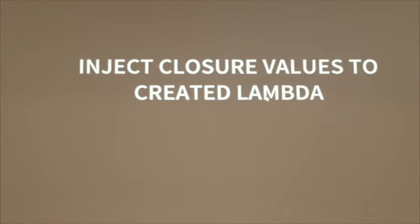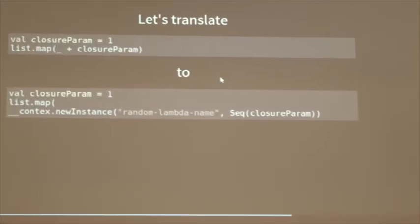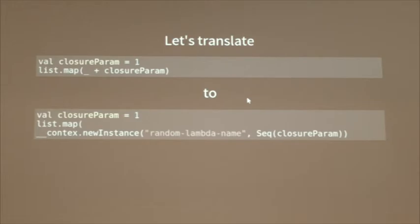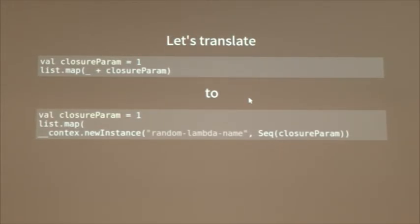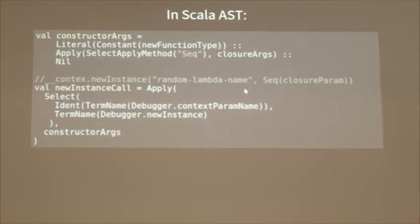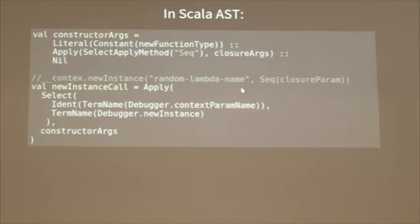Coming back: we gather all the closure parameters and now we have to inject them into the newly created lambda. It's really simple — take the expression and transform it into something where a context entry point creates a new instance of the lambda and passes all the closure parameters we found. In Scala AST this is straightforward. For a simple operation the AST is nothing special, and when you have to find a way to implement this it's not so hard — you can play with it easily. Macros are really fun.